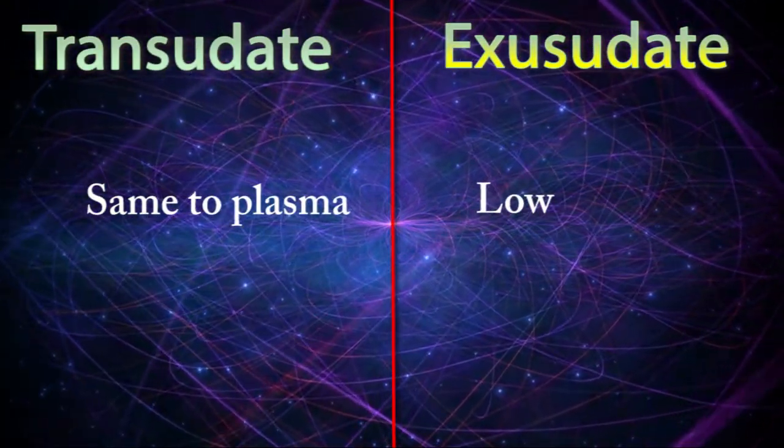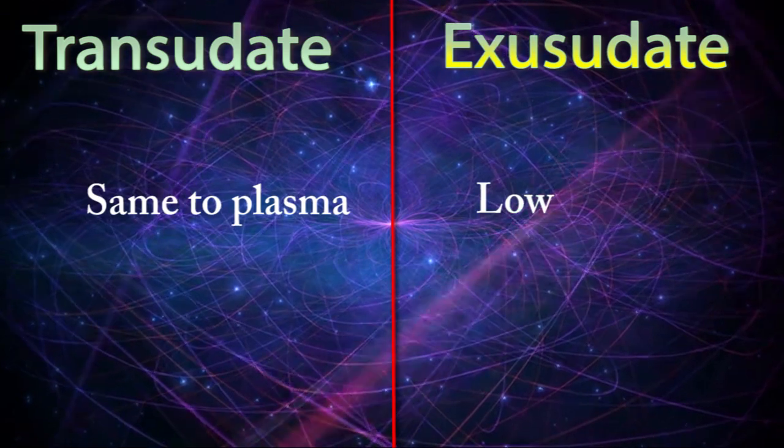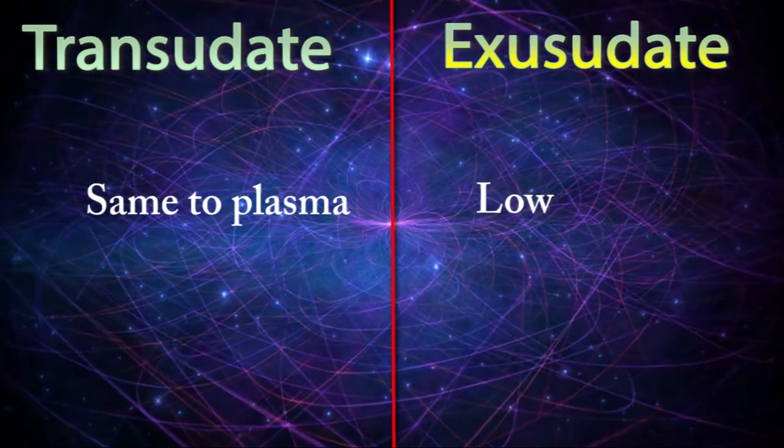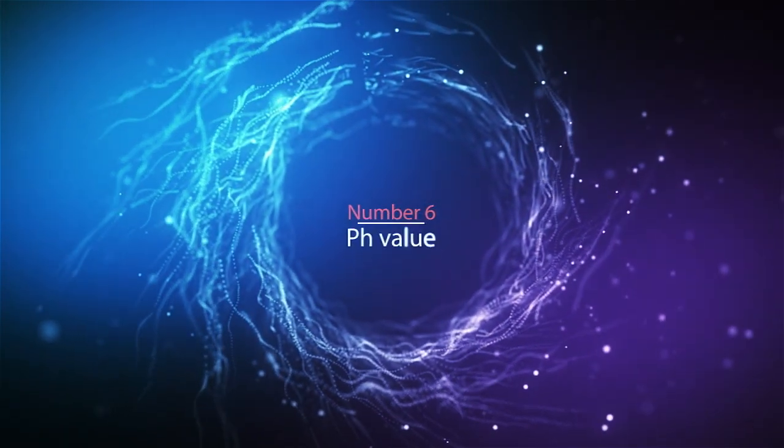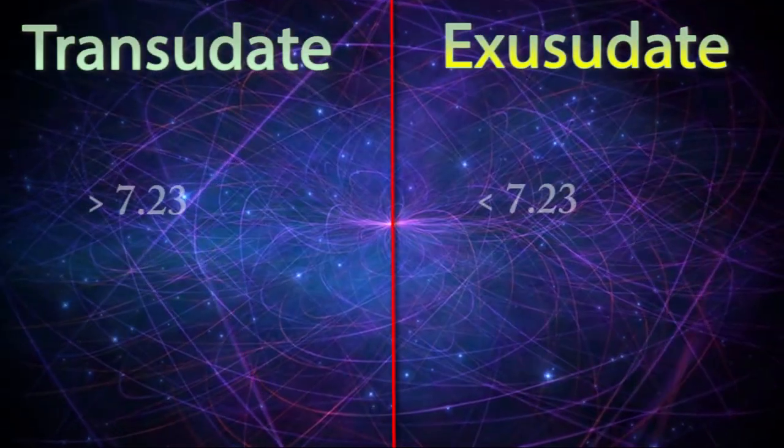Difference number six: pH value. Transudate has much higher pH than exudate.